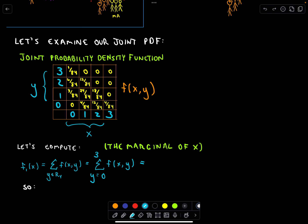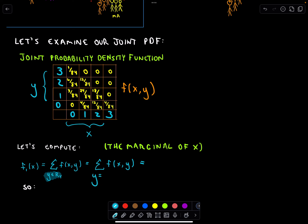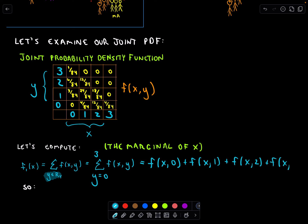So here we've got our joint PDF. Let's compute the marginal of x. According to our definition, we have to sum up over the range space of y. What values can y vary over? Well, y could vary from 0 up to 3 — that's the number of people we could select that have a master's degree for promotion. So computing this, we have f(x,0) + f(x,1) + f(x,2) + f(x,3), just letting y range over all possible values.